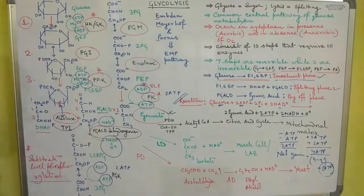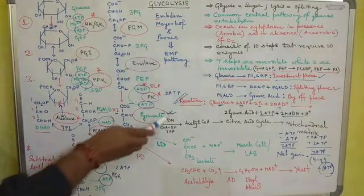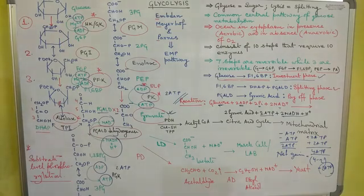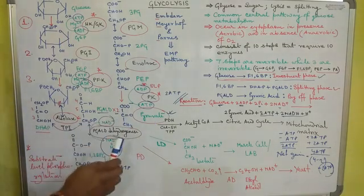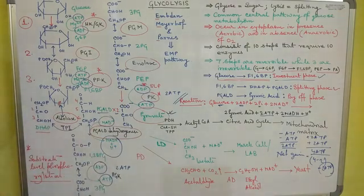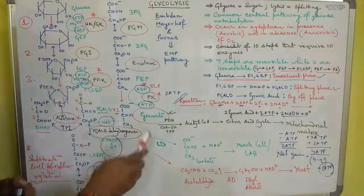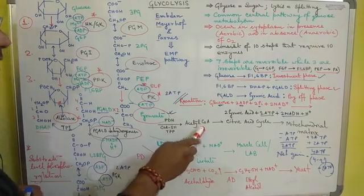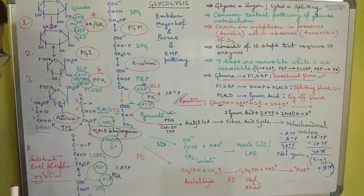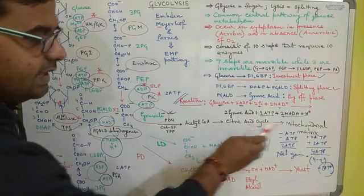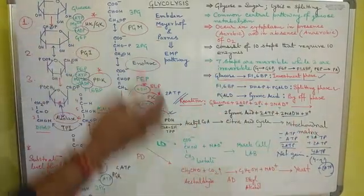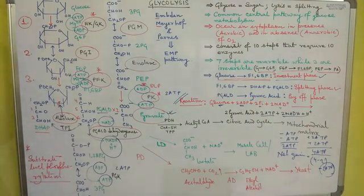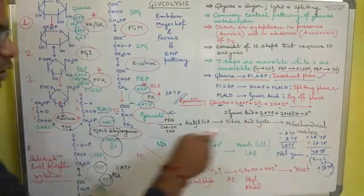Now, what is the fate of pyruvic acid produced in the cytoplasm? Pyruvic acid can follow any of three different processes depending on whether respiration is aerobic or anaerobic. During aerobic respiration, it is first converted into acetyl coenzyme A by the enzyme pyruvate dehydrogenase and enters the citric acid cycle in the mitochondrial matrix, where NADH + H+, FADH2, and GTP are produced.